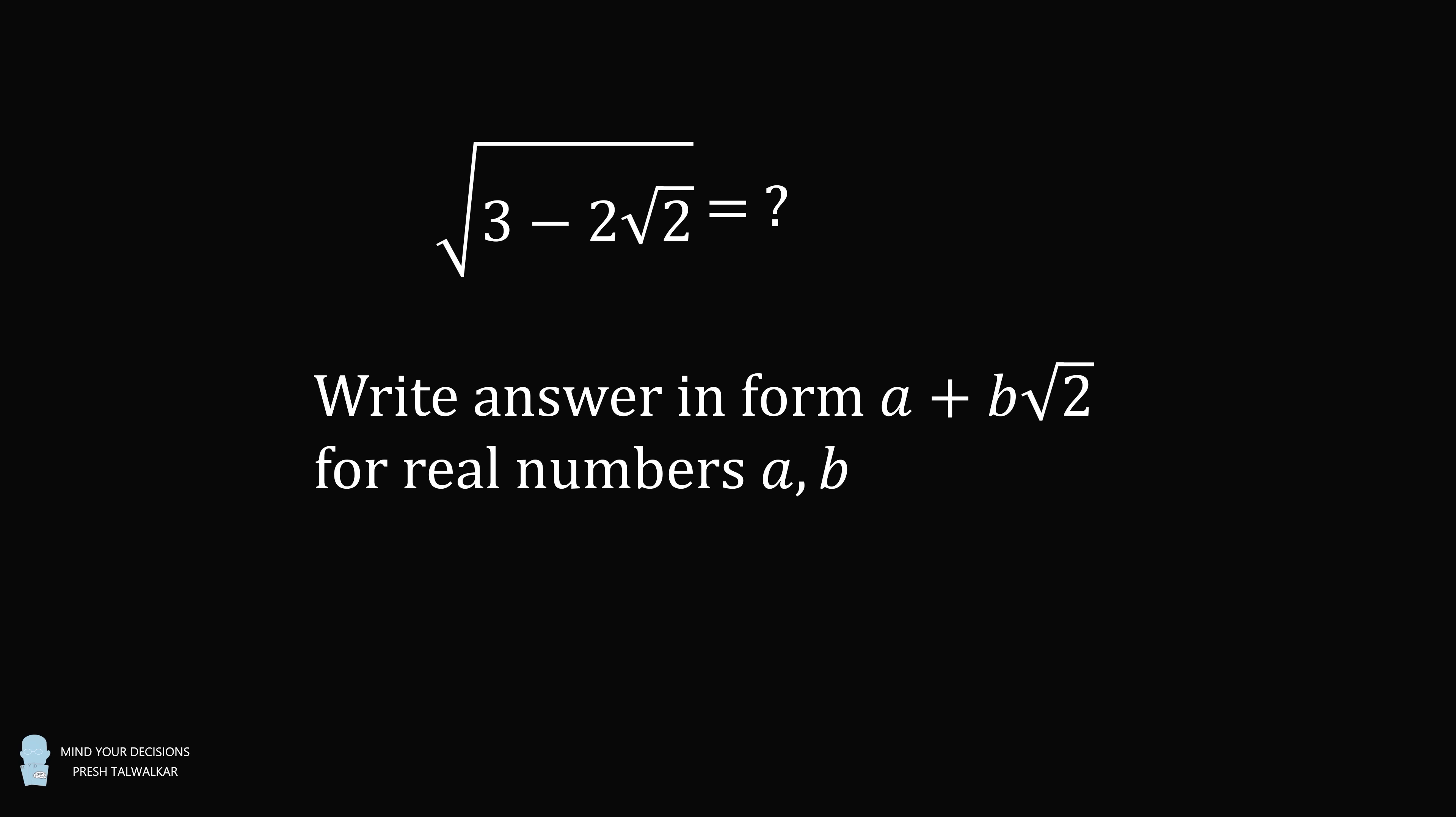Hey, this is Preshto-Walker. Simplify the square root of the quantity 3 minus 2 root 2. Write your answer in the form a plus b root 2 for real numbers a and b.